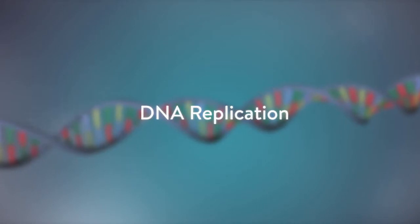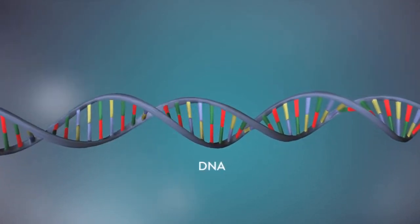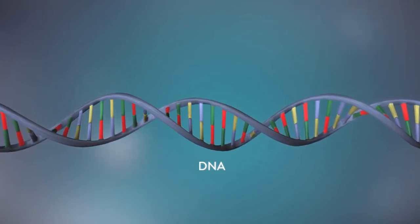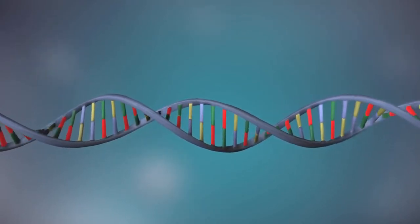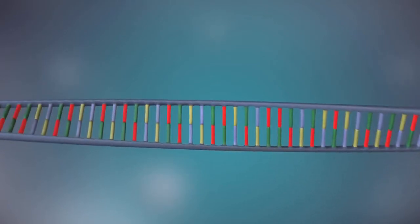DNA replication. DNA is a molecule made up of two strands, twisted around each other in a double helix shape. Each strand is made up of a sequence of four chemical bases, represented by the letters A, C, G, and T.